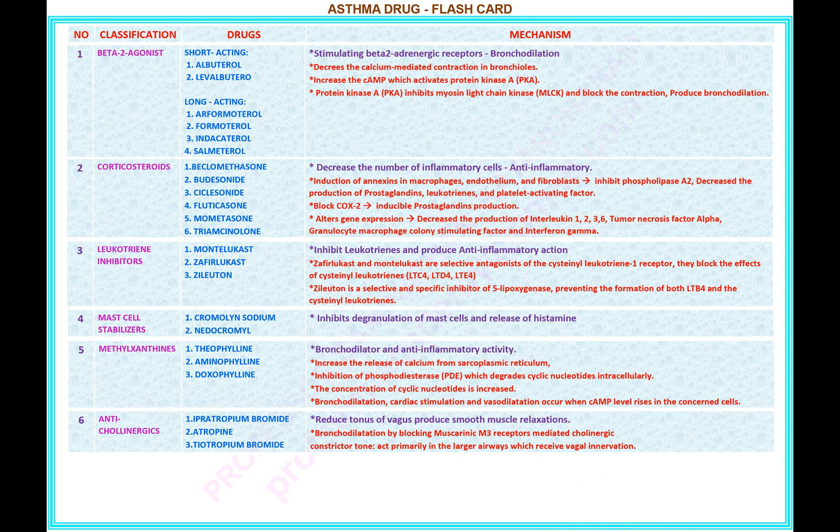Number 6 — name of the classification: anticholinergics. Drugs under this classification: 1) ipratropium bromide, 2) atropine, 3) tiotropium bromide. Mechanism of anticholinergics: reduced tonus of vagus produces smooth muscle relaxation. Bronchodilation by blocking muscarinic M3 receptors mediated cholinergic constrictor tone; acts primarily in the larger airways which receive vagal innervation.